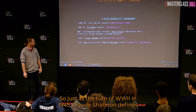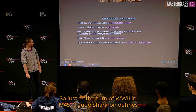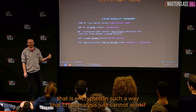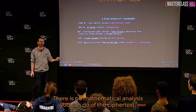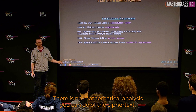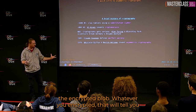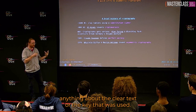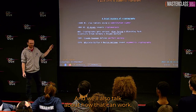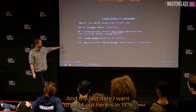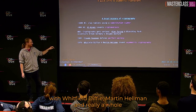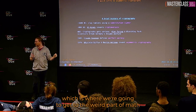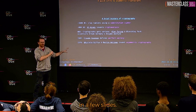From there, things sped up. Just at the turn of WWII in 1945, Claude Shannon defined 'perfect secrecy' — when something is encrypted such that no mathematical analysis of the ciphertext can tell you anything about the clear text or the key used. And the last important date is 1976, when Whitfield Diffie, Martin Hellman, and others looked at asymmetric cryptography — which is where we get to the weird part of the math in a few slides.